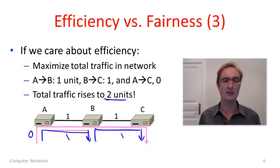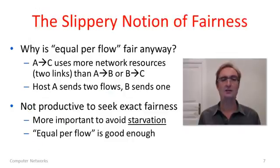Really, we've done so by penalizing A-C. That unfortunate flow happened to go through two links, so if we just set it to zero and give the bandwidth to the other flows, we can send more traffic through the network. So you can see that fairness and efficiency can leave us at different points.